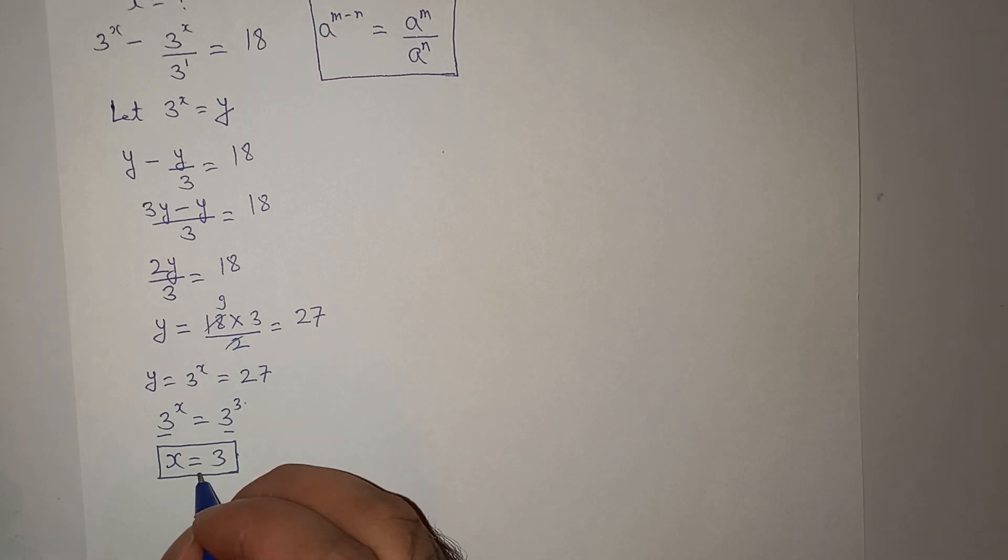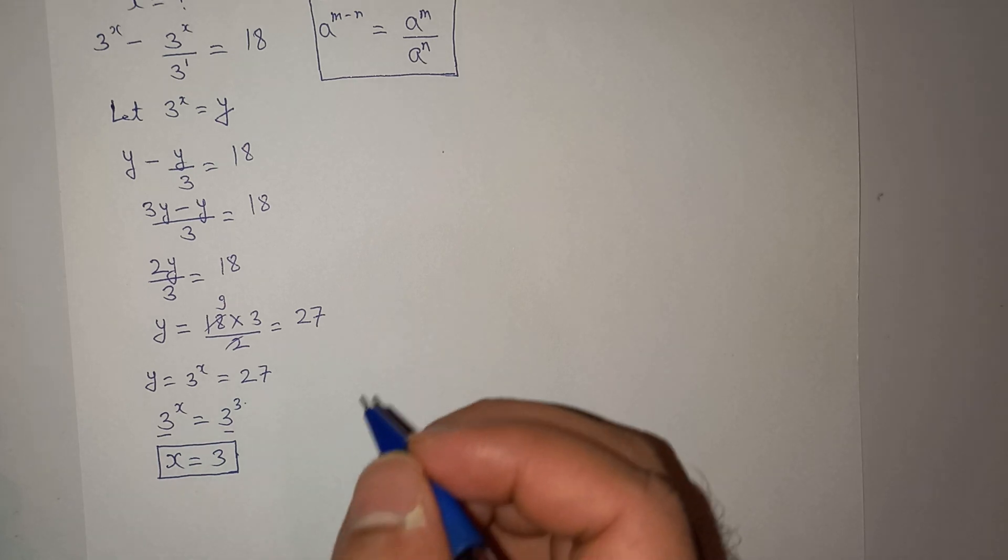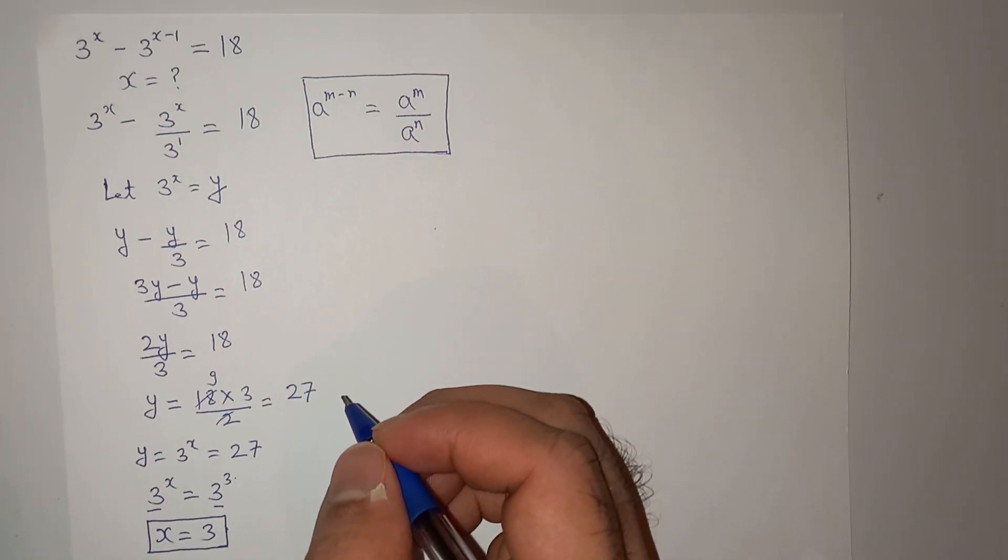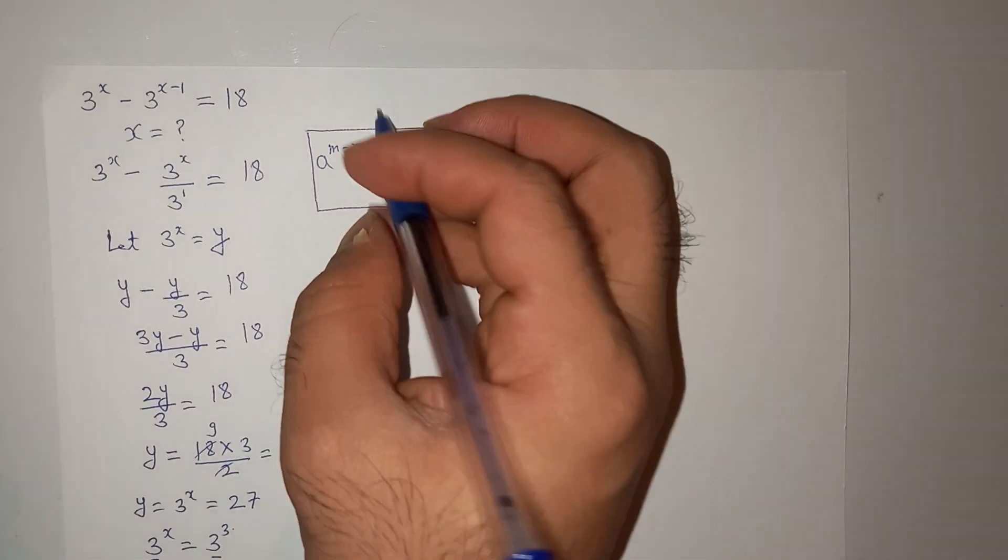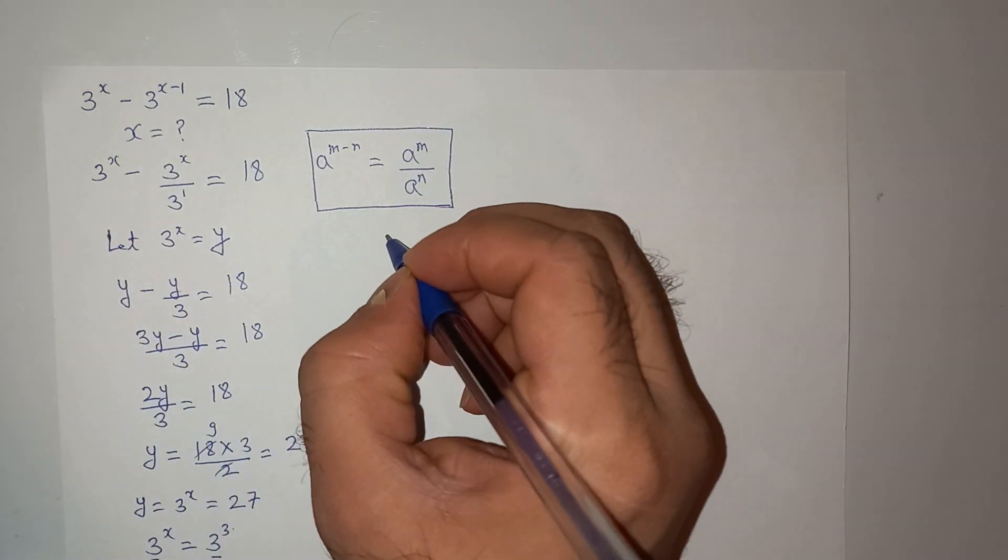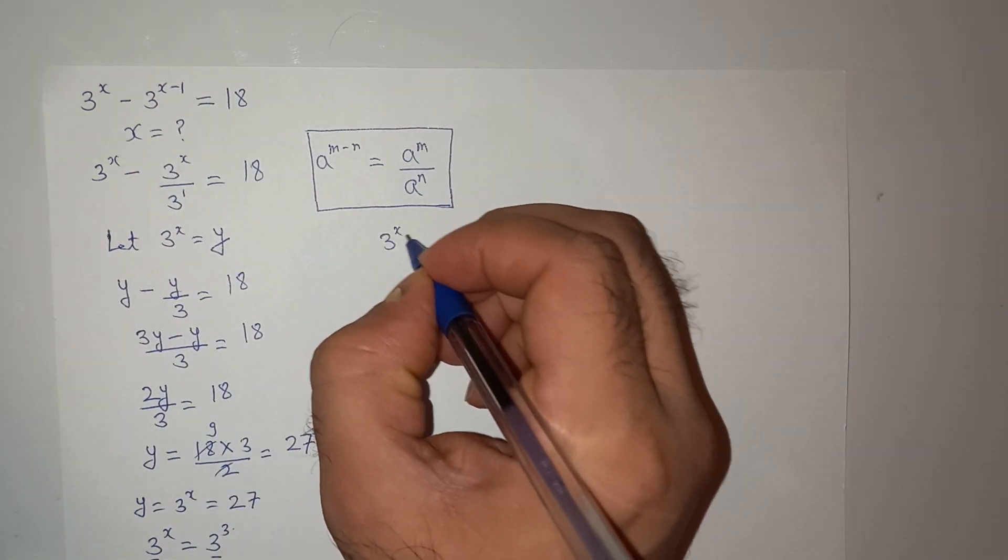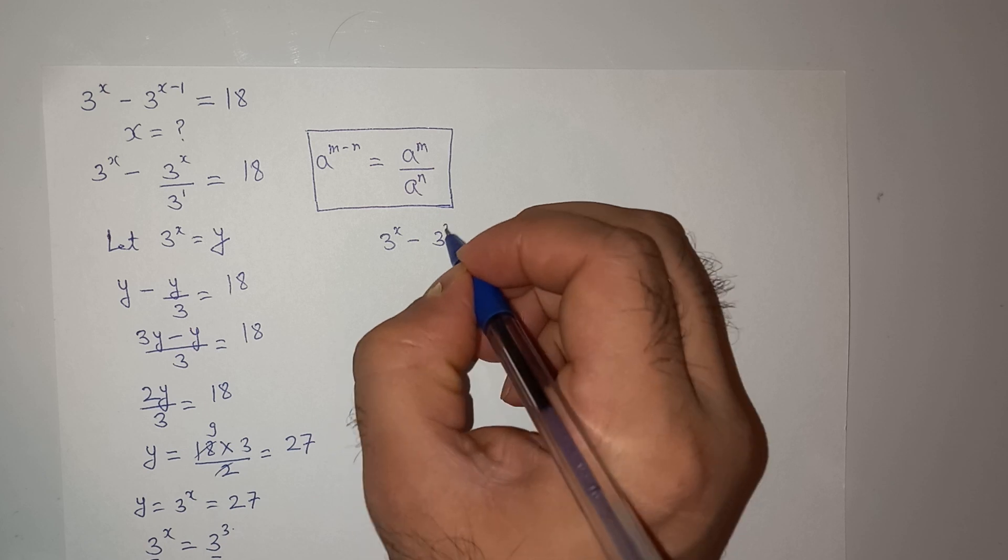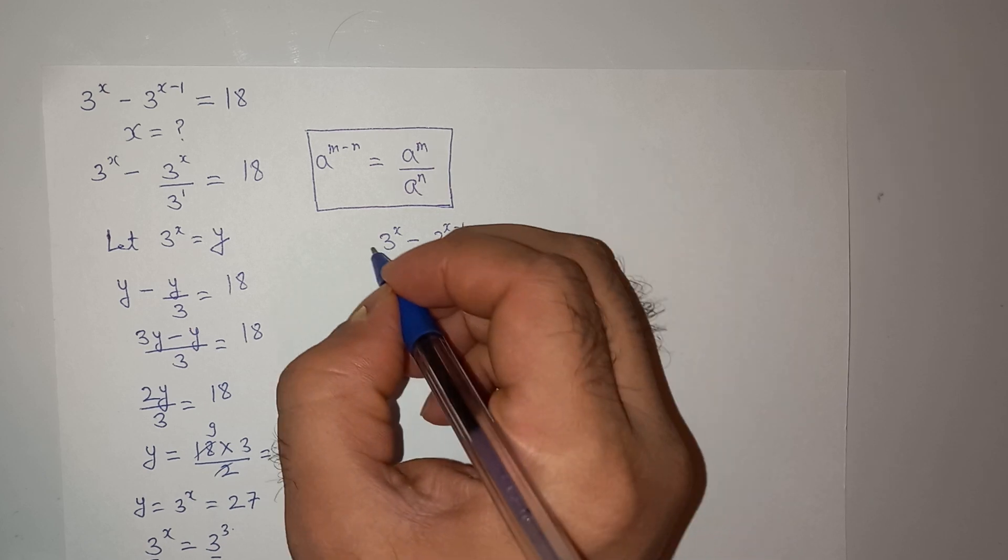Now let's try to put this value in the original equation and check that our answer is correct or not. So this is the original equation. Let me write here. 3 power x minus 3 power x minus 1. Right?